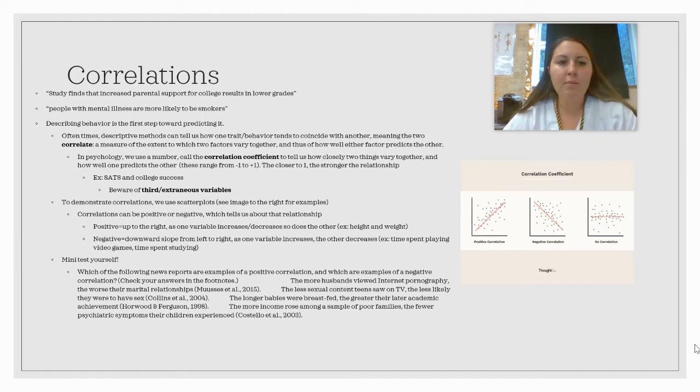For example, some correlations: a study finds that increased parental support for college results in lower grades. That means that when parents give more support, there is a relationship between more support and lower grades. Or people with mental illness are more likely to be smokers. I want you to pay attention to the language here. However, increased parental support, more likely—a correlation cannot state this causes this. Rather, it can state that this is related to this.